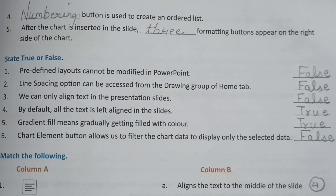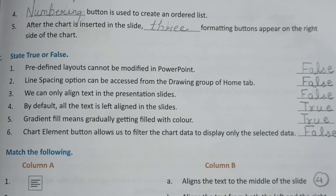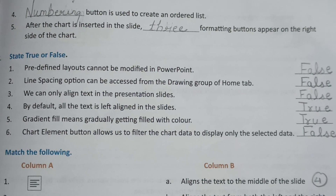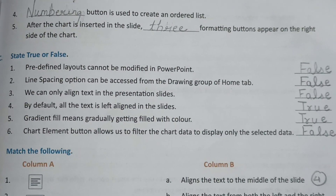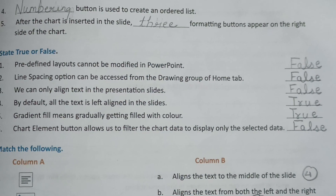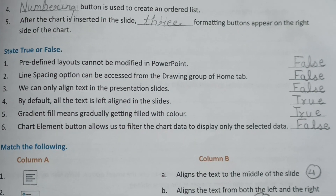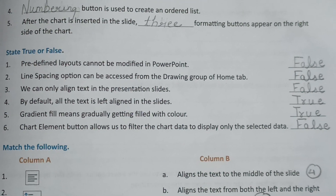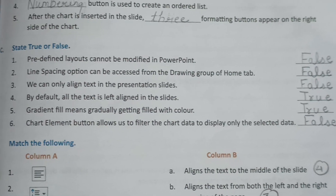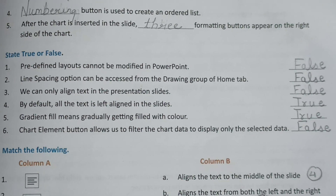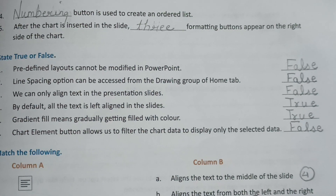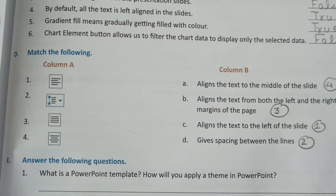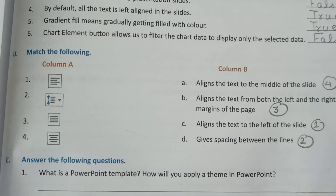Part C: True or False. Number one: Predefined layouts cannot be modified in PowerPoint — False. Number two: Line spacing option can be assessed from the Drawing group of the Home tab — False. Number three: We can only align text in the presentation slides — False. Number four: By default, all the text is left aligned in the slides — True. Number five: Gradient fill means gradually getting filled with color — True. Number six: Chart Element button allows us to filter the chart data to display only the selected data — False.